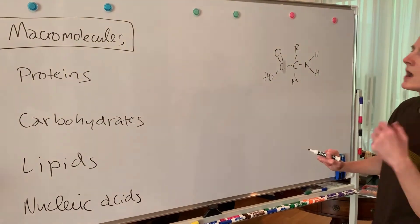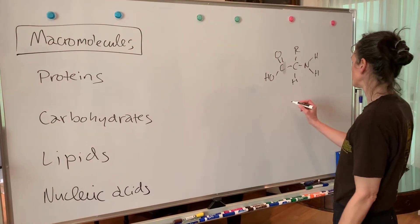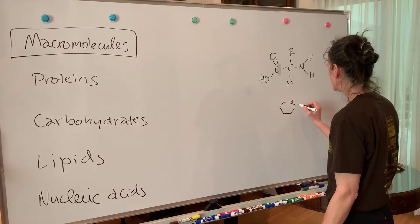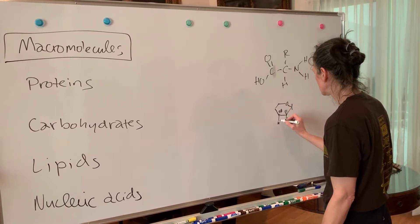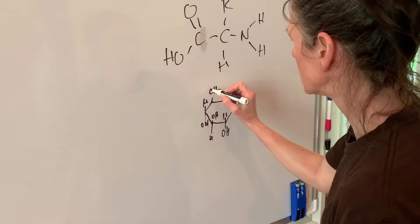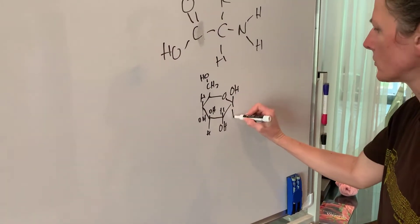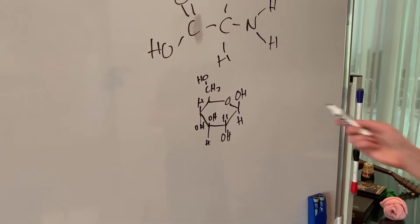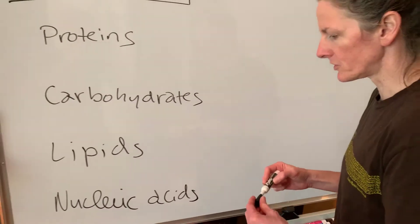For carbohydrates — starches and sugars — complex sugars are made up of simple sugars. For example, glucose is a monosaccharide. A typical glucose molecule is a monosaccharide, and our carbohydrates are going to be made up of monosaccharides, which are their monomers.